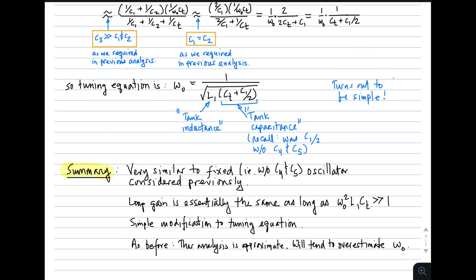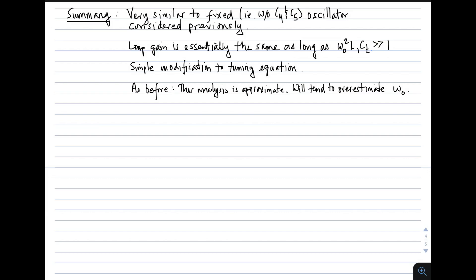So to summarize, this is very similar to the fixed oscillator analysis that we did previously. The loop gain is essentially the same as long as we make the simplifying approximation which is in addition to what we assumed before. It's a simple modification to the tuning equation, namely that term right there, the tuning capacitance. And as before, this analysis is approximate; generally it overestimates the frequency because generally there's more capacitance in the circuit than we account for. So just keep that in mind. This is a way to get started, not the final answer. So that concludes this lecture.